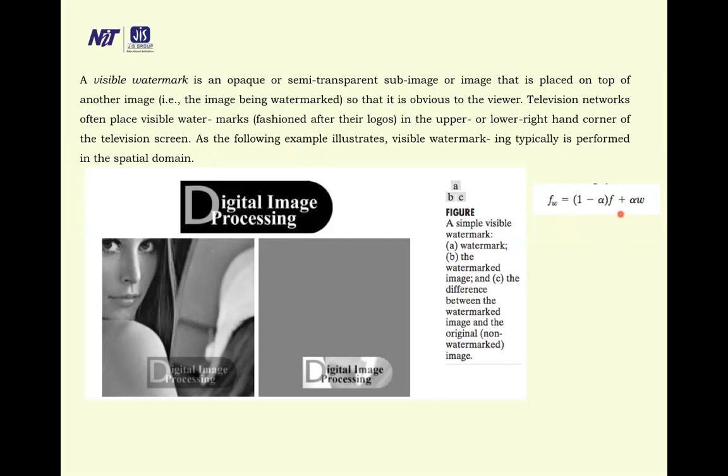Now, f is the original image, omega is the watermark image and alpha is the coefficient that controls the amount of watermarking visibility. After watermarking the image will be fw equals 1 minus alpha times f plus alpha times w. And this will be clear, we will do hands-on session in MATLAB.